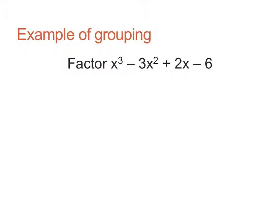Let's look at a specific example. So here we have a polynomial with four terms. There is no greatest common factor for all four terms, so we're going to try grouping. What we do is that we form groups first.